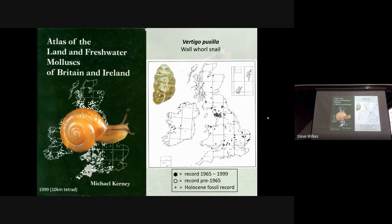The round dots, of which there are very few on this particular species, are records before 1965, and the crosses — nearly all the ones in the lower part of Britain — are fossil records only, post ice age. So it's quite clear that this species was very common in the south in times long gone by, but is now limited to further north, and this is almost certainly due to changing climate during the Holocene and the warming since the ice age.